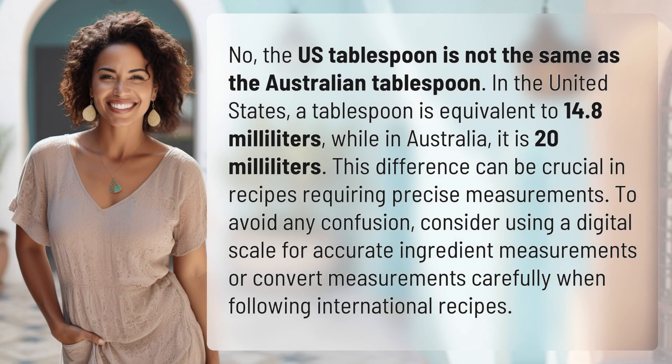the US tablespoon is not the same as the Australian tablespoon. In the United States, a tablespoon is equivalent to 14.8 milliliters, while in Australia, it is 20 milliliters. This difference can be crucial in recipes requiring precise measurements.